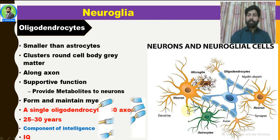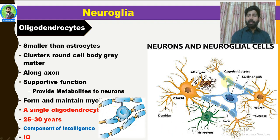Looking at this diagram, these are the oligodendrocytes. These are multiple neuronal axons being encircled. This is how they create the myelin sheath. This is the myelination sheet, this is the axon, and this is the nodal structure.